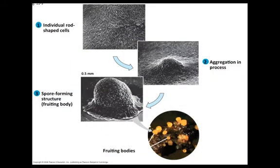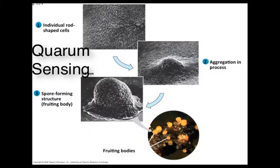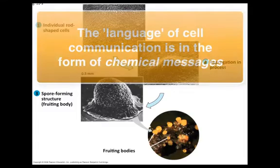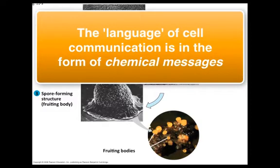Bacteria have a way of communicating their condition too. A density response called quorum sensing allows them to coordinate their behavior, such as secreting chemicals that help change their environment. Other bacteria can sense when food is scarce and can collectively change into a form that allows them to survive long periods of time without food. These are all ways organisms can enhance their survival. The language these organisms and your cells use is in the form of chemical messages.